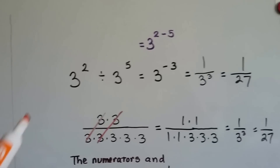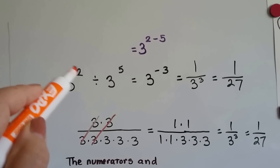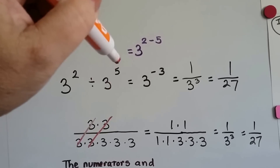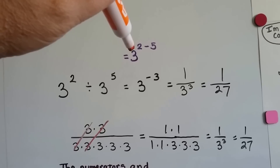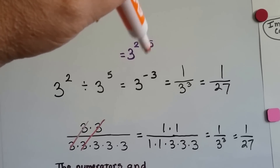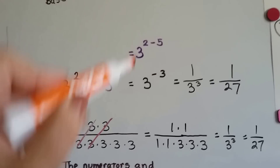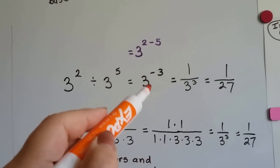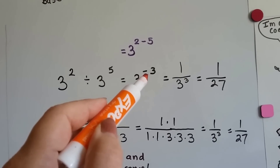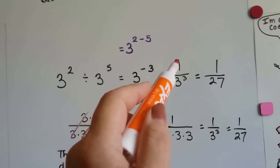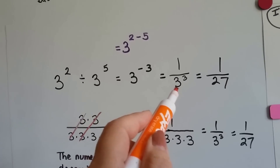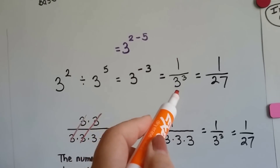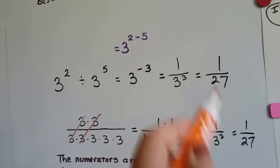What if it's the other way and we've got a smaller exponent on top? So 3 to the 2nd power divided by 3 to the 5th power. Now we're going to get into negative exponents because 2 take away 5 is negative 3. As we explained in a previous video, when we've got a negative exponent, you think fraction — put it under the 1 and take away the negative sign — and you get 1 over 3 to the 3rd power, which is 1/27.